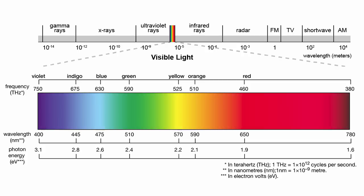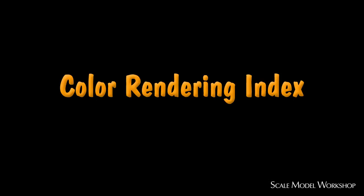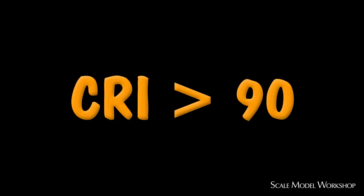A common specification for how well an artificial light source mimics daylight is the color rendering index, or CRI. If you're interested in accurate color rendition, look for a value of at least 90.